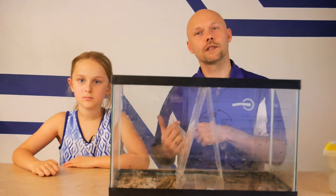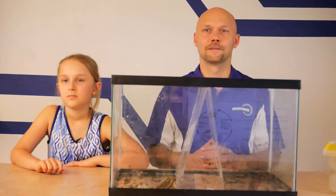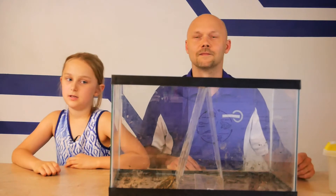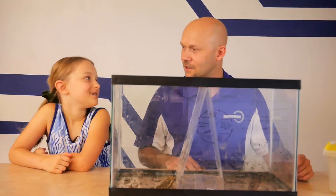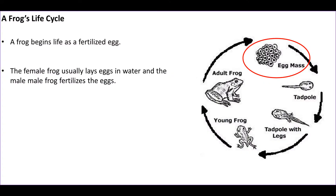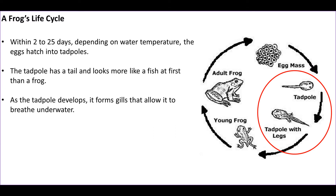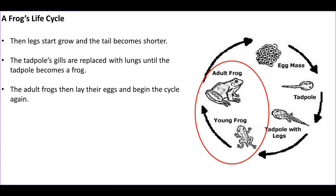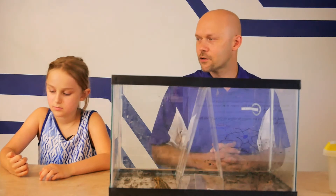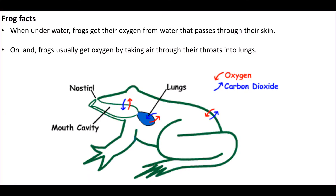Now we're going to talk about the life cycle of frogs. Tren, can you tell us about it? Their eggs hatch, then they have legs, and then they're a frog. A frog's life cycle begins as a fertilized egg. The female frog usually lays eggs in water and the male fertilizes them. Within two to twenty-five days, depending on water temperature, the eggs hatch into tadpoles. Tadpoles have a tail and look more like a fish. As the tadpole develops, it forms gills to breathe underwater, then legs grow, the tail shortens, and gills are replaced with lungs until it becomes an adult frog. An interesting fact — when underwater, frogs absorb oxygen through their skin, and on land they breathe through their lungs.